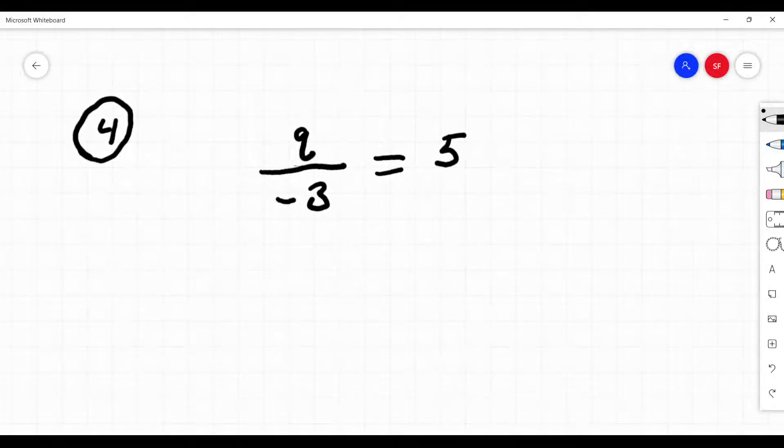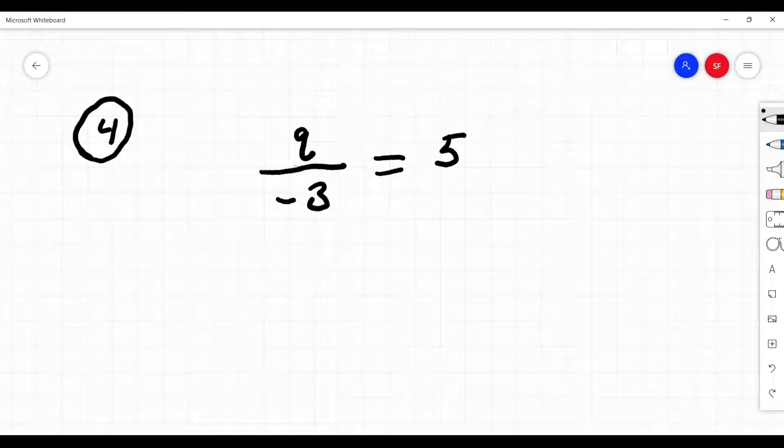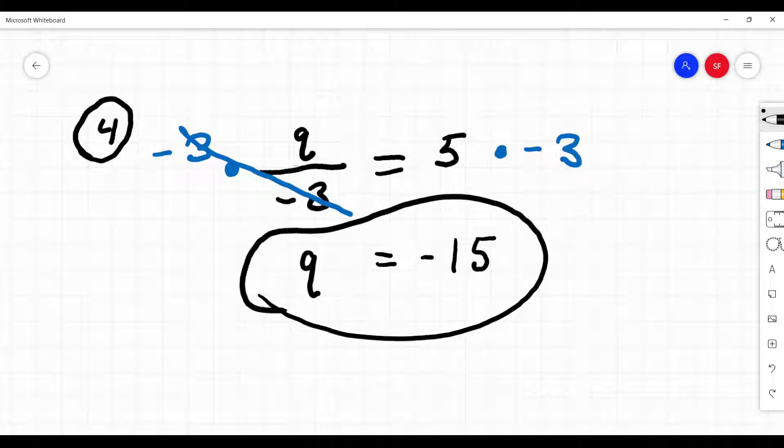So how is that negative three attached to the cube? Is it added, subtracted, multiplied, or divided? It's divided. So how are we going to get rid of it? Multiplication. We're going to multiply times negative three. Those cancel out, leaving us with just a cube. What's 5 times negative 3? Negative 15.